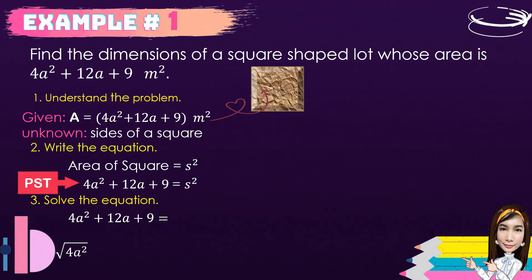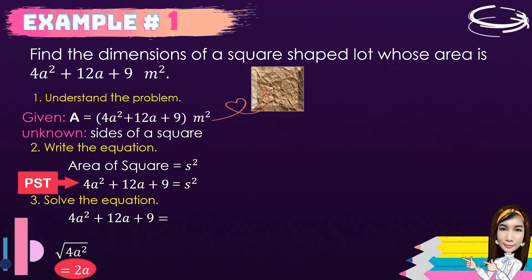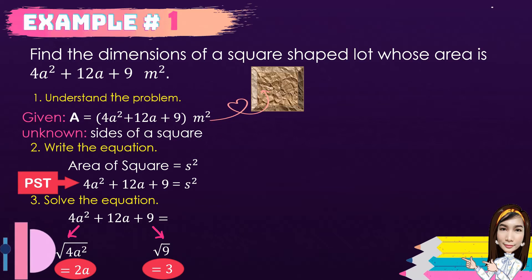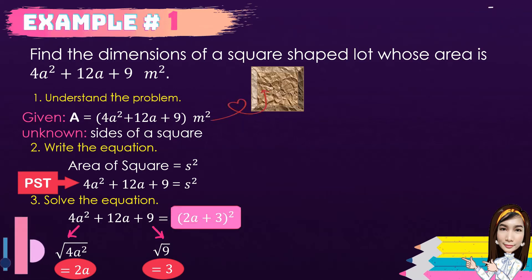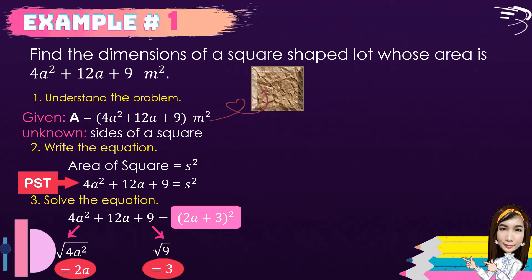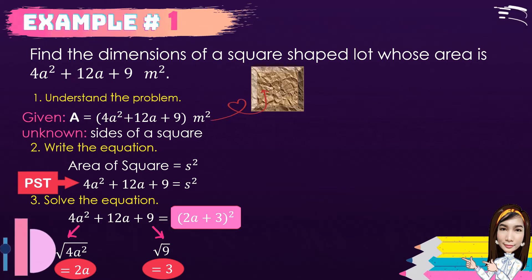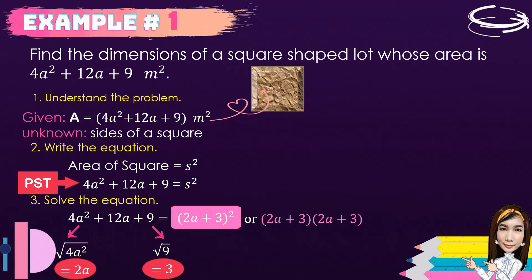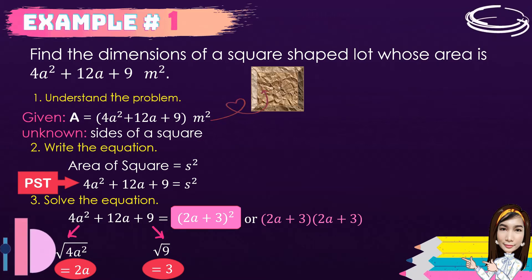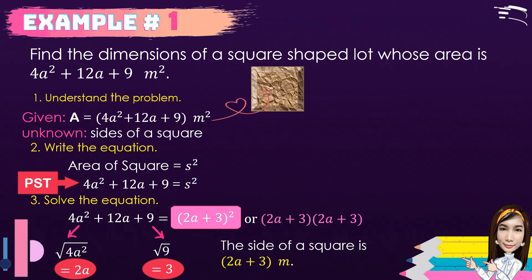Third, we're going to solve the equation. Given the perfect square trinomial 4a² + 12a + 9, we get the square root of the first term 4a², which equals 2a, and the square root of the last term 9, which equals 3. So we have the factor (2a + 3)². Therefore, the side of the square is 2a + 3 meters.